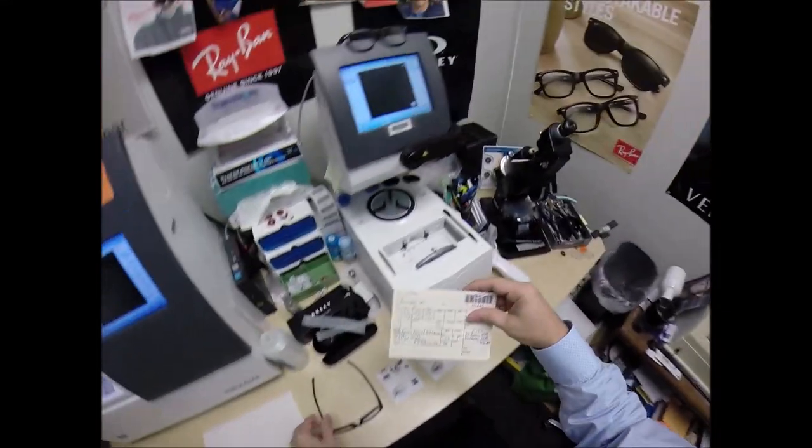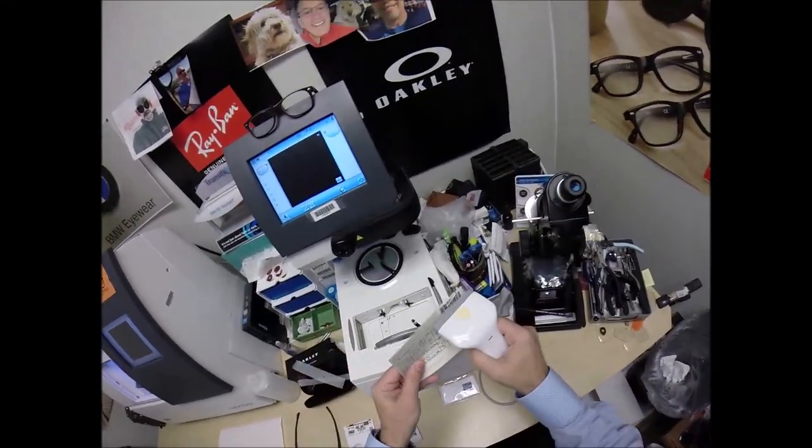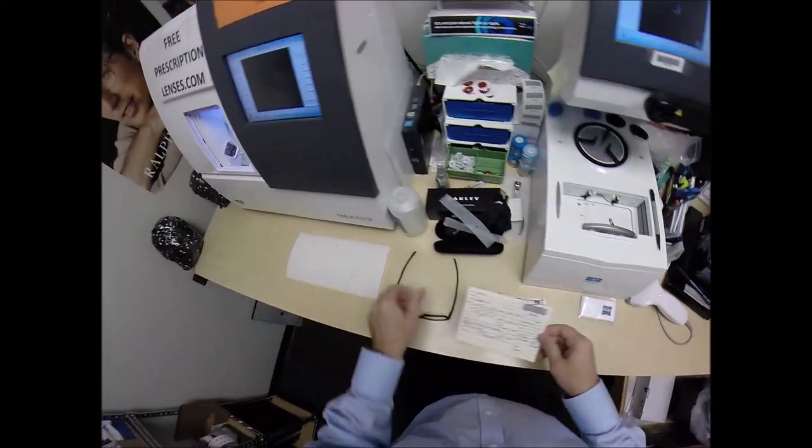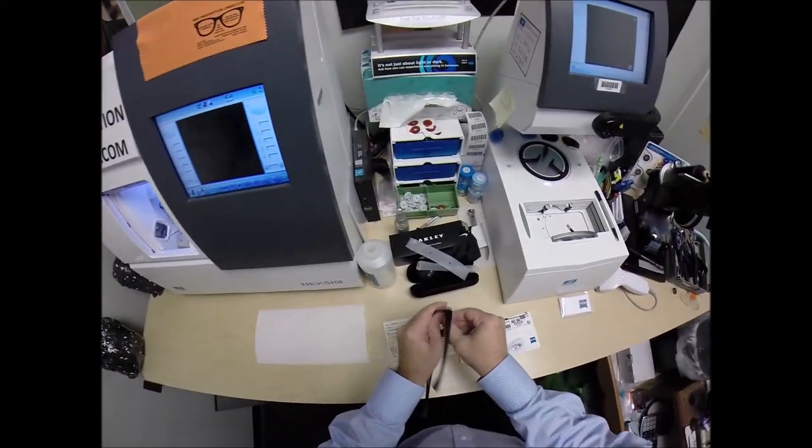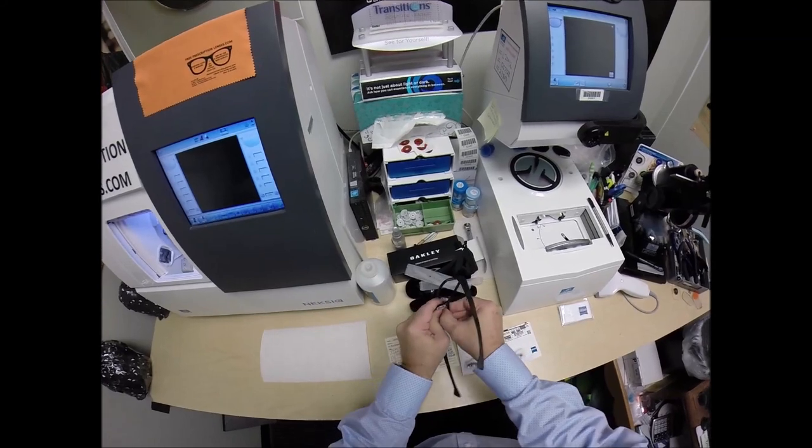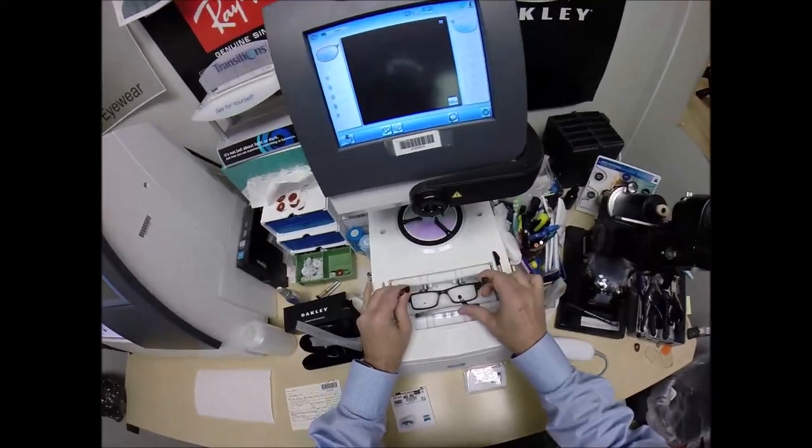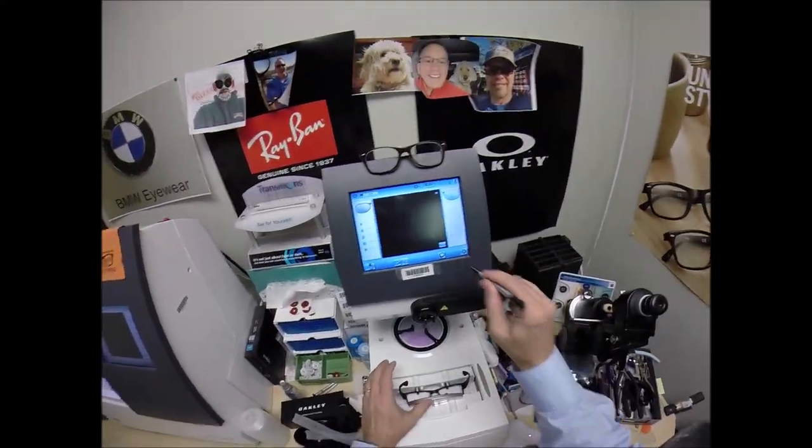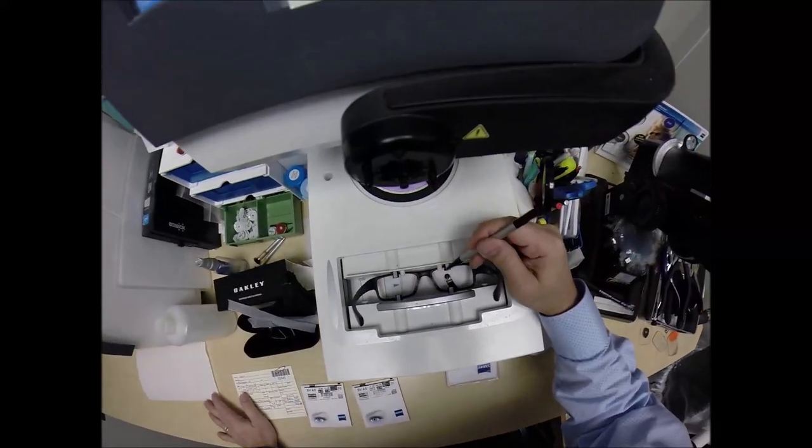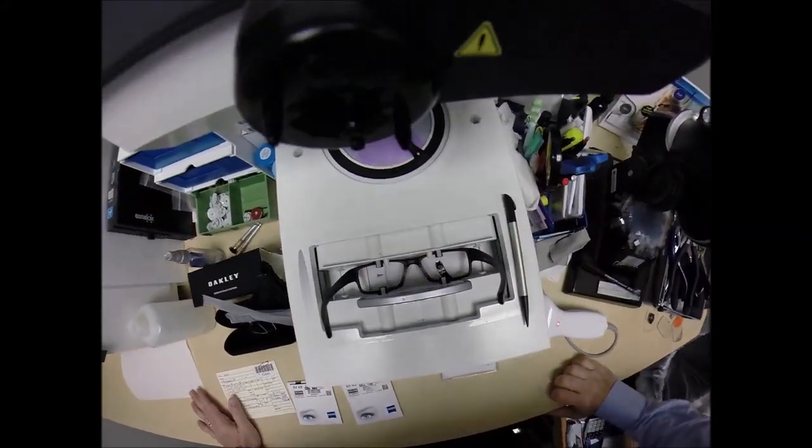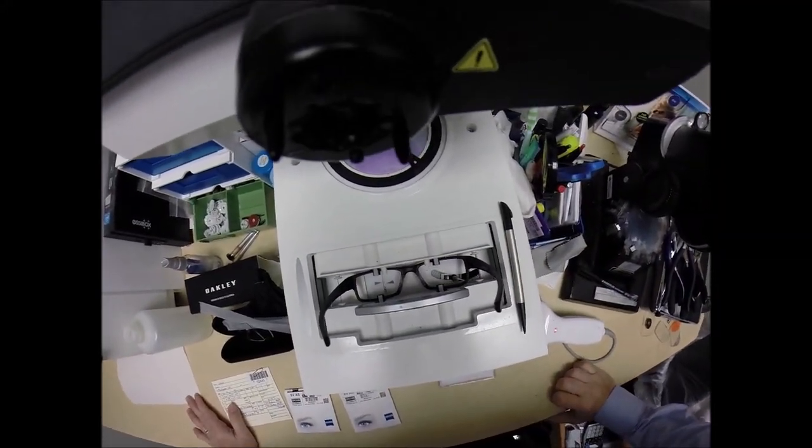I'm going to go ahead and program this shape into the computer. You are Secret Agent 2445. Pop out the original demo lenses, of which you will receive everything. Put your frame into the tracing element of my blocker and hit start. A little stylus is going to pop up, go around, trace the inside bevel of the right side of the frame before doing the same thing on the left.